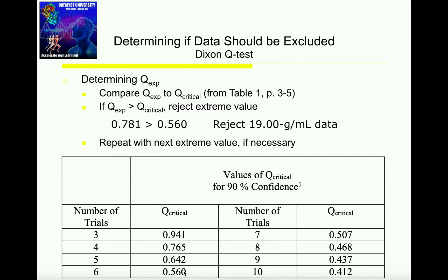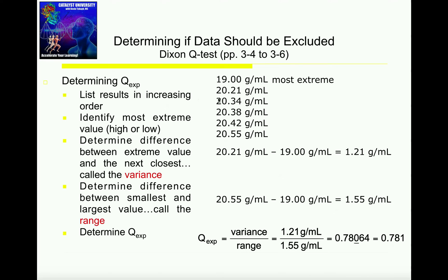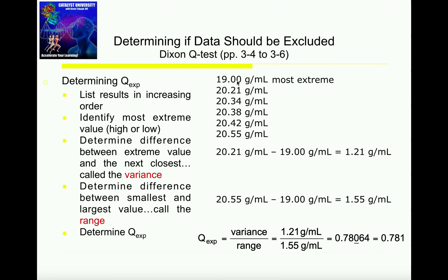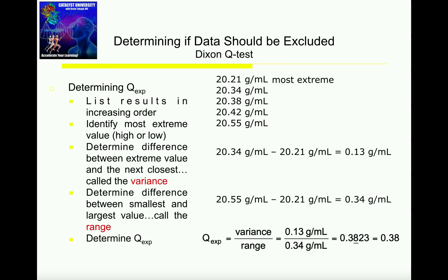At this point, I have a Q experimental that I just calculated, 0.781, and I have the Q critical, which I just looked up in the table based on the number of trials or measurements, which was 0.560. The rule is this: if your experimental Q is greater than the critical Q, then you reject the extreme value. 0.781 is greater than 0.560, so that means we can essentially throw out the 19.00. If we were to throw out that 19.00, we'd just be left with all these other five data points.